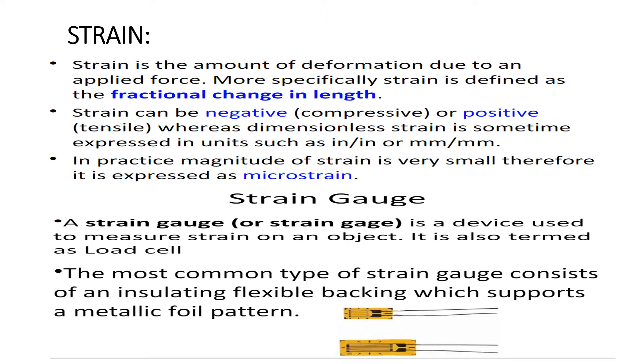Next is strain gauge. What is a strain gauge? A strain gauge is a device used to measure strain on an object. It is also termed as load cell. The most common type of strain gauge consists of an insulating flexible backing which supports a metallic foil pattern. Here are the figures shown, the strain gauge having two wire terminals as output.